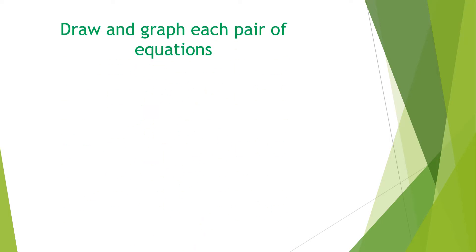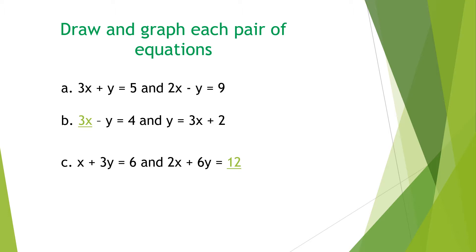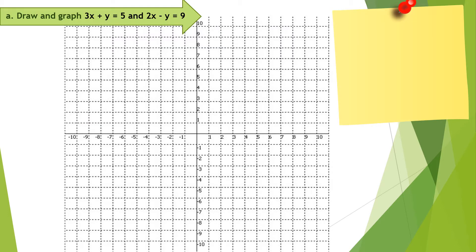Let's start with drawing the graph of each pair of equations. These are examples of systems of linear equations. Let us graph them to be able to determine the different graphs of a system of linear equations. Let's start with letter A.